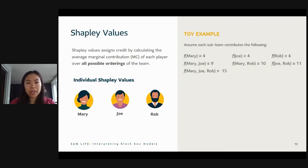Okay, so let's say that we have here Mary, Joe, and Rob. Mary can, by herself, pull in four million dollars worth of sales. Joe can also bring in four million dollars worth of sales. And similarly, Rob can do the same as well. Now, Mary and Joe can bring in nine million together. Mary and Rob can bring in ten million. And Joe and Rob can bring in eleven million. But all three of them can bring in fifteen million. So we know how each sub-team works and how much money they can bring in for sales.